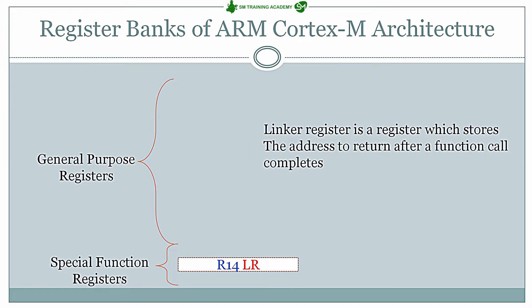In an embedded program we have many functions, and whenever a function call is made, the return address — the address from which execution should resume after that function completes — is stored in the link register. Based on this address, after finishing all executable statements in the function call, the control fetches the address from the link register and resumes the process in the main function or the caller function. This is the basic functionality of the link register.